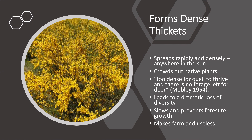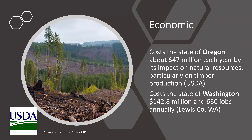Scotch broom forms really thick, dense thickets that can crowd out native plants and animals. Animals like quail or deer cannot get in to forage or eat. Their dense spreading can lead to dramatic loss of diversity in plants and animals, and it slows and prevents forest regrowth and can make farmland useless. The economic impact seen in Oregon and Washington states is about 47 million dollars in Oregon and 142.8 million dollars and 660 jobs annually in Washington — so it's significant.